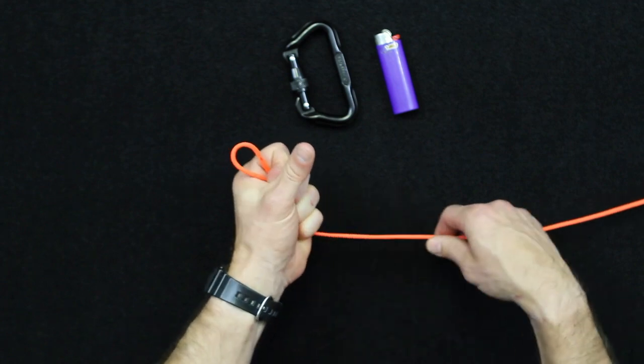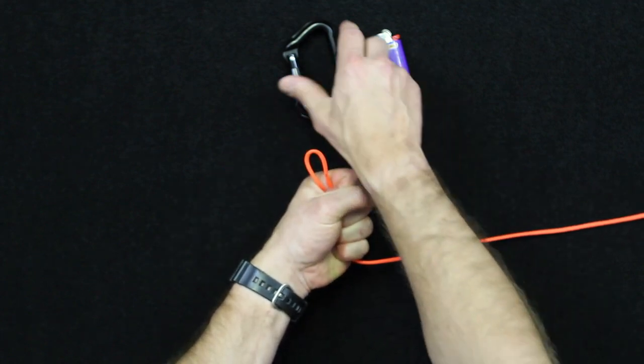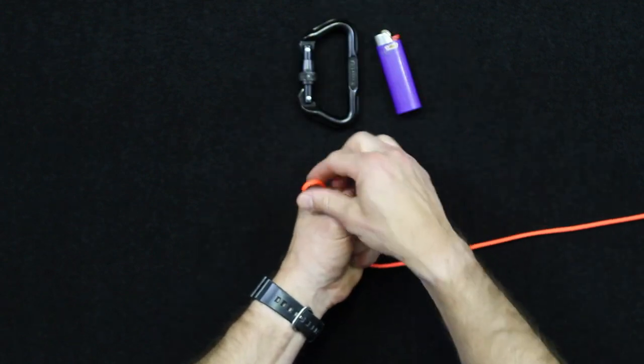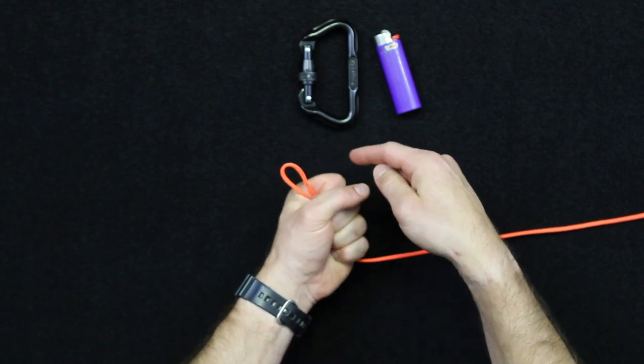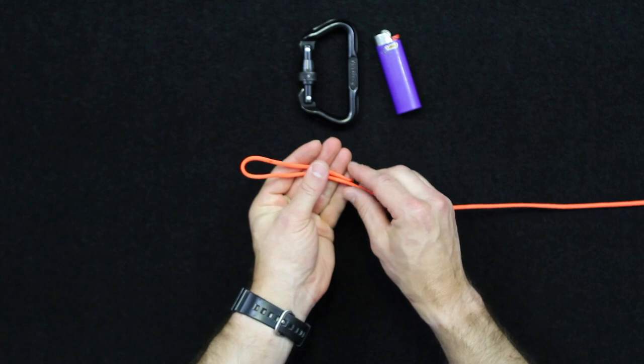So what that does is once this is all together, it gives you that amount with the bite to actually hook a carabiner or something like that on to store the deployment lanyard. So whatever size you want your bite to be, it needs to be determined at this point as you're creating it.